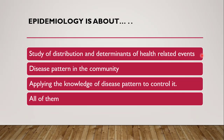The next question: Epidemiology is about — the study of distribution and determinants of health-related events, disease pattern in the community, applying the knowledge of disease pattern to control it, or all of them? The correct answer is all of them. As discussed, Epidemiology is the study of distribution and determinants of disease and health-related events, and also the application of this knowledge to control diseases.